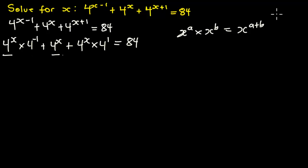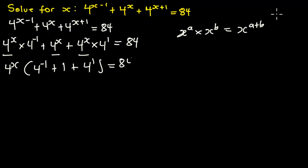From here, 4 exponent x is common in all terms, so we factorize it out. We have 4 exponent x, leaving 4 exponent (negative 1) plus 1 plus 4 exponent 1, equal to 84.